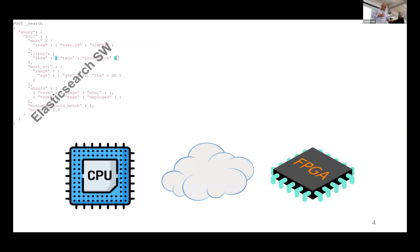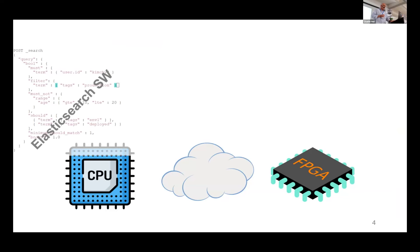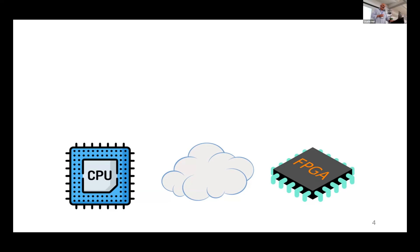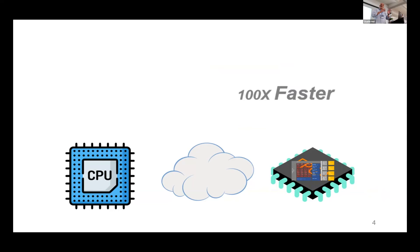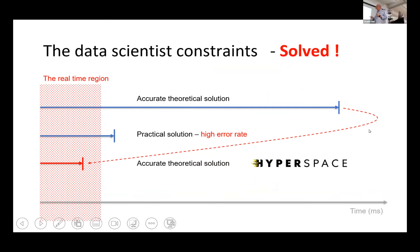To illustrate: on the left we have a CPU in the cloud with Elasticsearch in software. On the other side is our architecture implemented on FPGA-based hardware in the cloud, and the result is 100x faster. Our implementation took the theoretical solution, implemented it in hardware, and it falls inside the real-time region without any compromise — no error rate, no low conversion — with the accurate solution on a chip, in the cloud, and still the flexibility of software.